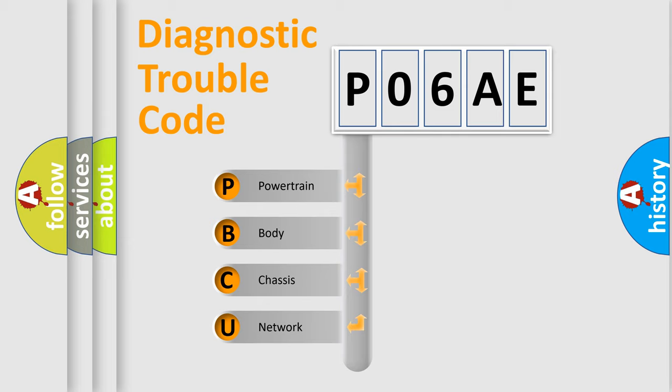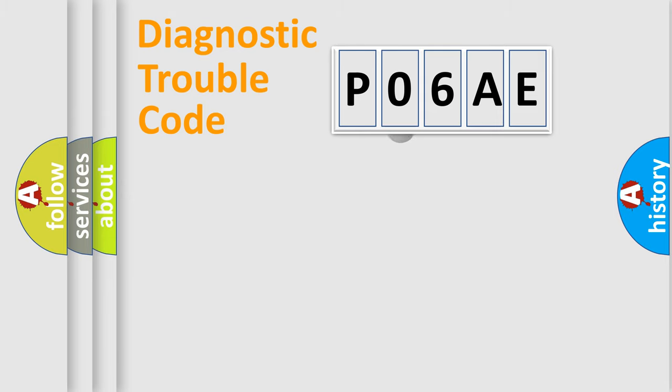We divide the electric system of automobile into four basic units: Powertrain, Body, Chassis, and Network. This distribution is defined in the first character code.